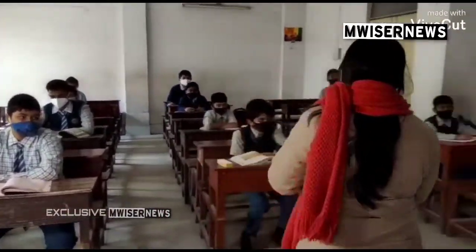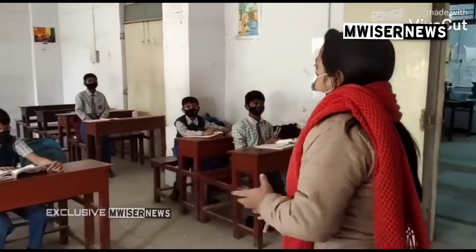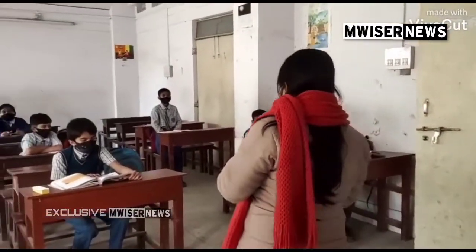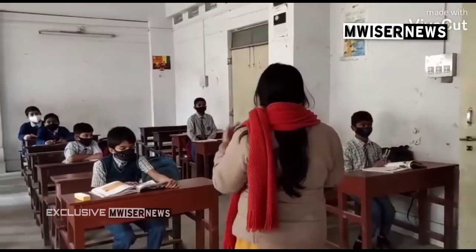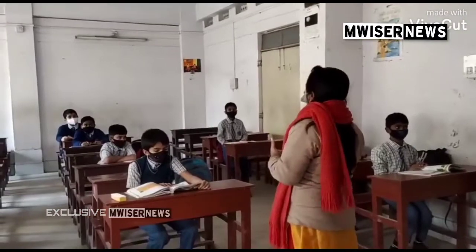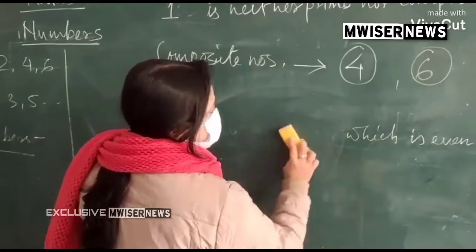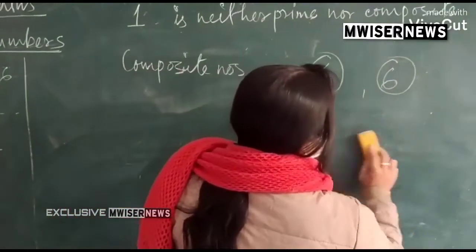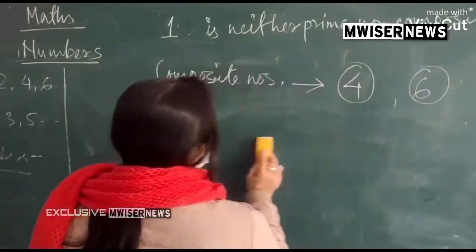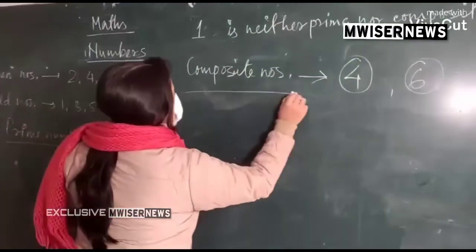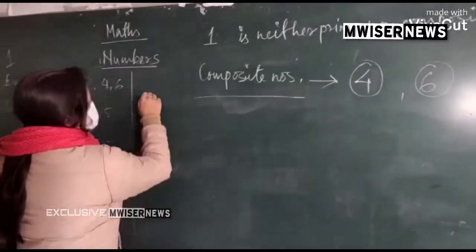The numbers which are divisible by only 1 and the number itself are called prime numbers. How can we define any number? What is a prime number?